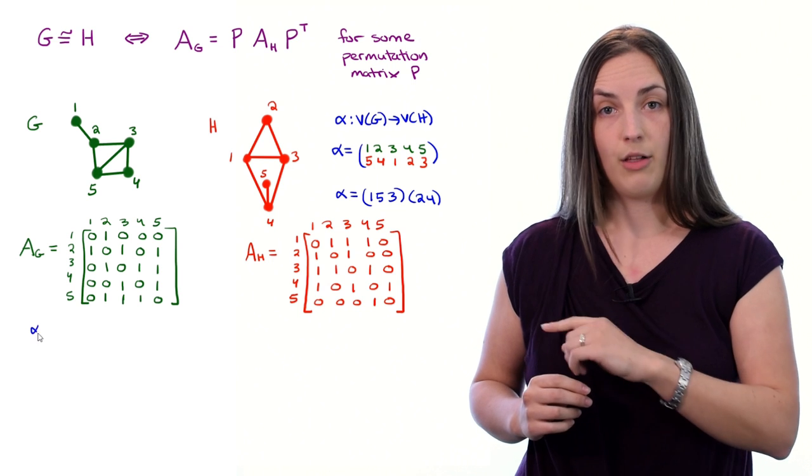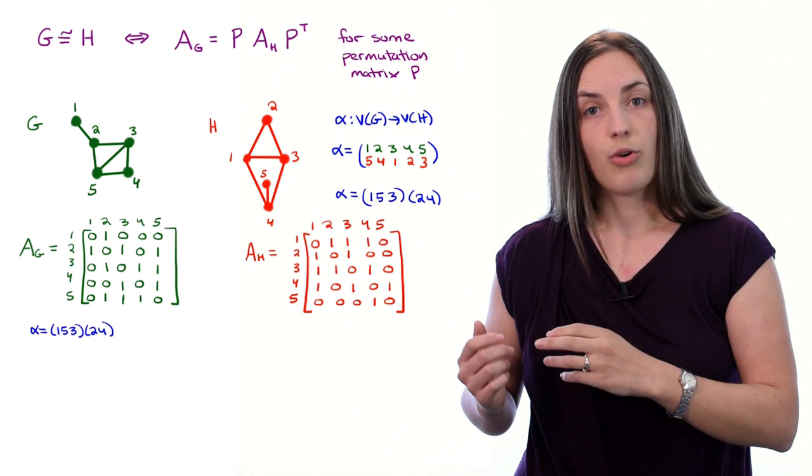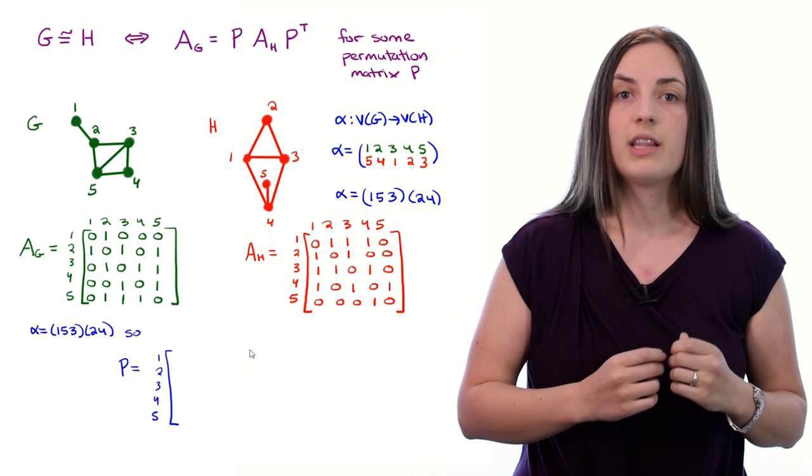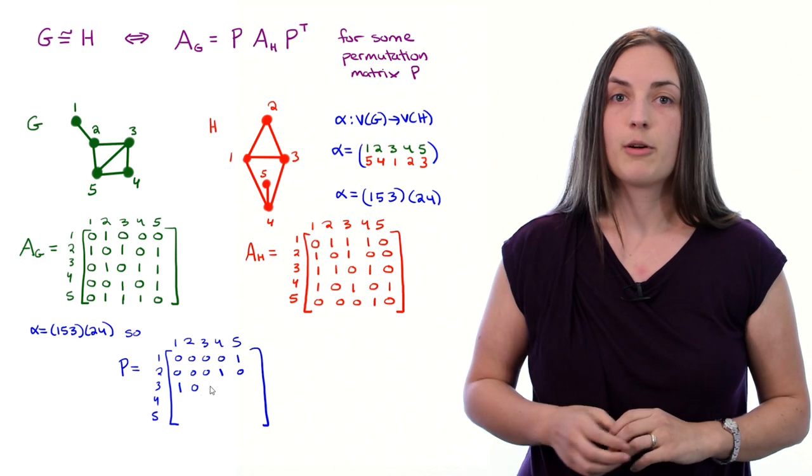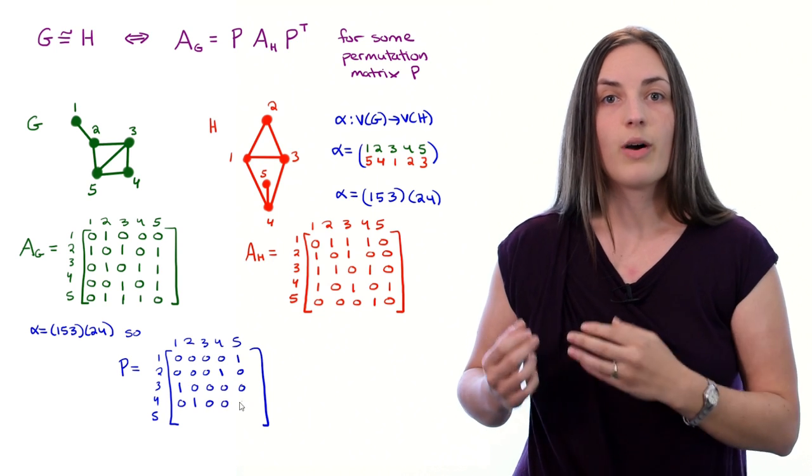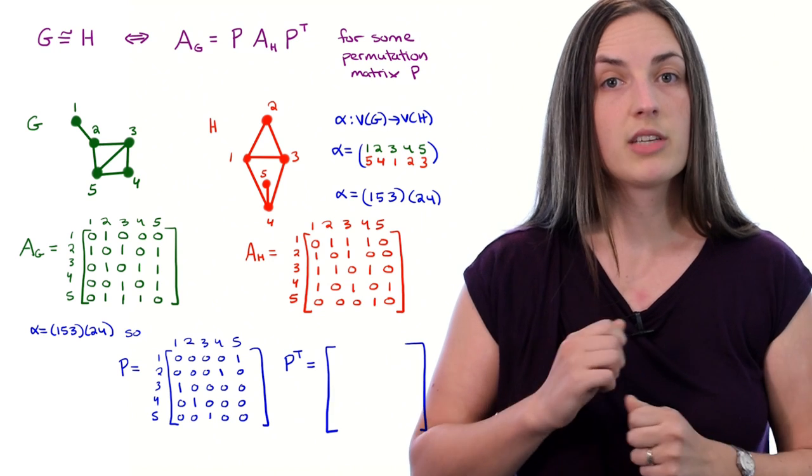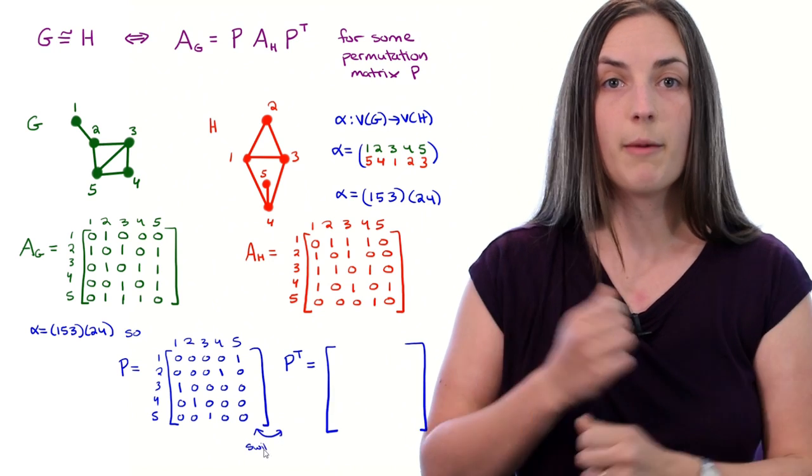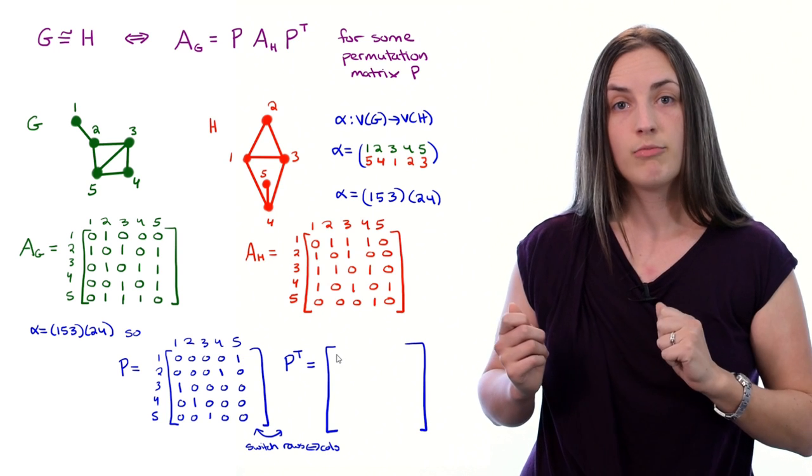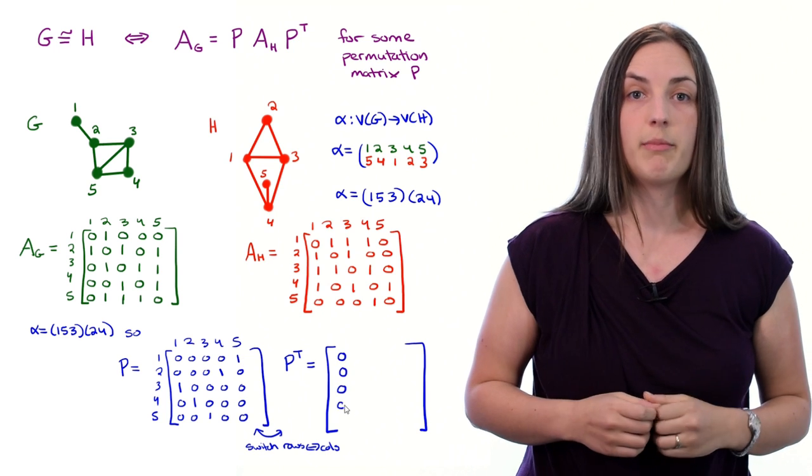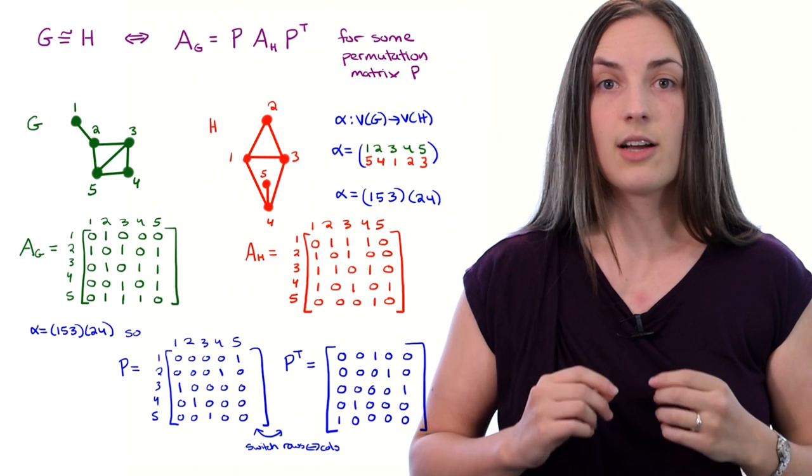So since we already know that our mapping α worked out, let's use that to try to build ourselves a nice permutation matrix. We have to remember what α does. In particular, α maps 1 to 5, so in row 1 we'll put a 1 only in the 5s column and 0s everywhere else. Similarly, we fill in the rest of the permutation matrix according to what α tells us to map to. To find P transpose, remember that the transpose of a matrix is found just by swapping rows for columns. So if we look at our old matrix P and find the first row, that gives us our first column in P transpose. And we just finish off and write down P transpose.